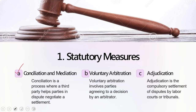When we look into conciliation and mediation specifically, conciliation is a process where a third party helps parties in dispute negotiation leading to a particular settlement. Section 4 of the Industrial Disputes Act 1947 lays down the function of a conciliation officer. The conciliation officer is to create a kindred atmosphere within the industry which will help the parties to settle the disputes between them.